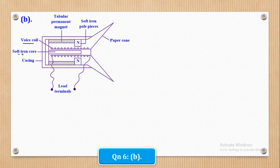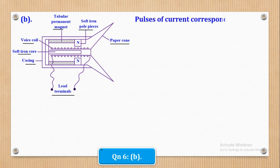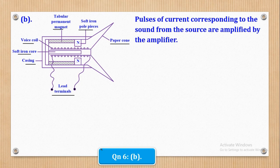And you label it very well. So voice coil is there, soft iron core, casing, lead terminals, tubular permanent magnet, soft iron pole pieces, paper cone. Know that these are both poles, these are both north poles. You should know that. So now let's start the explanation, describing the experiment.